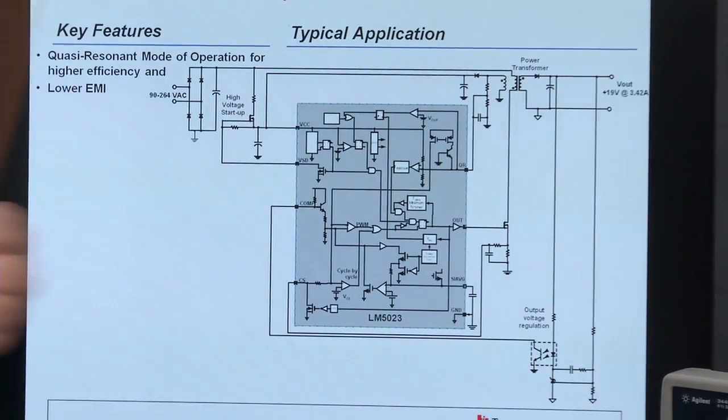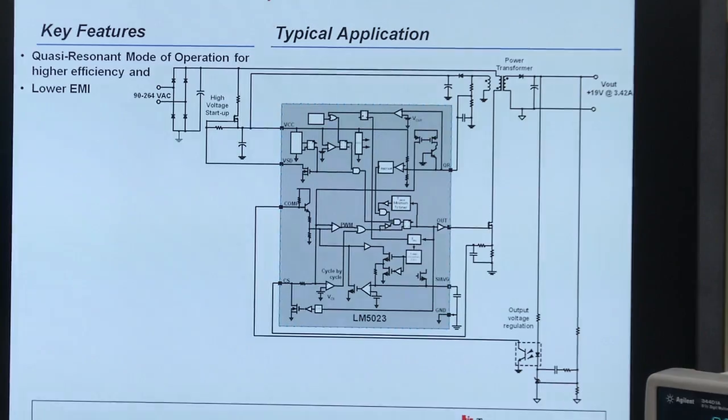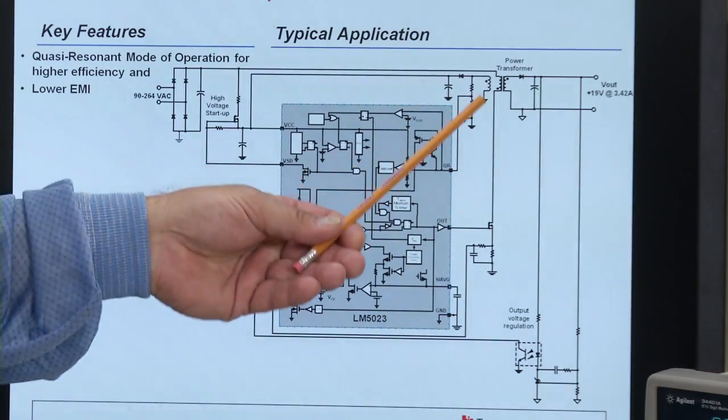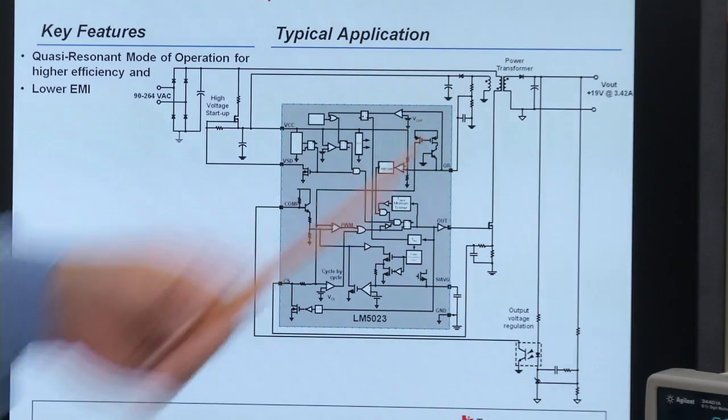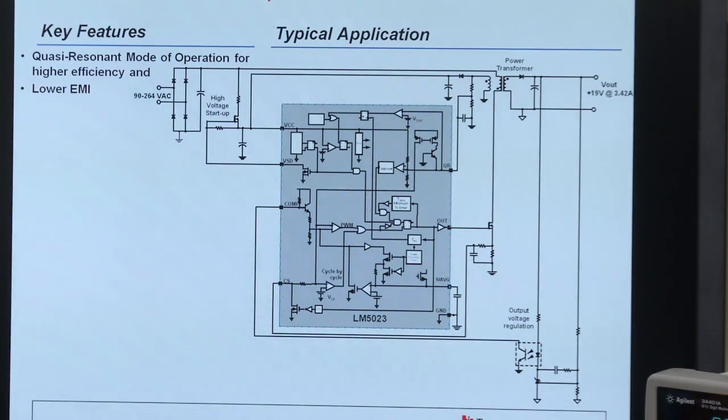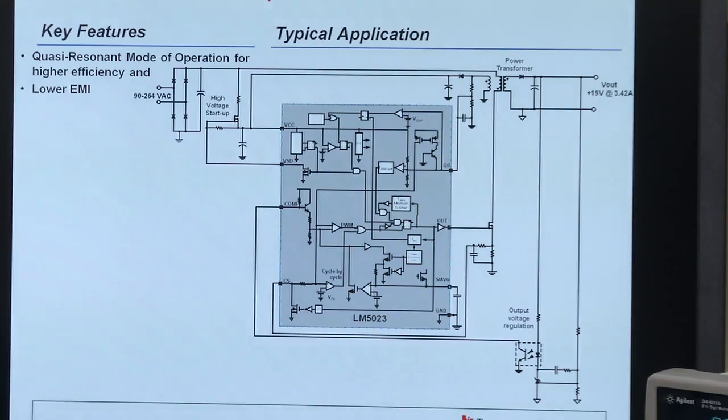Now looking at the secondary current, it will start out at I-peak and ramp down to zero. When it hits zero, we know we have transferred all the energy from the primary to the secondary. When the current is zero, we have an open circuit on the secondary and an open circuit on the primary, so we now have our resonant tank circuit, which is the primary inductance and the output capacitance of our MOSFET.